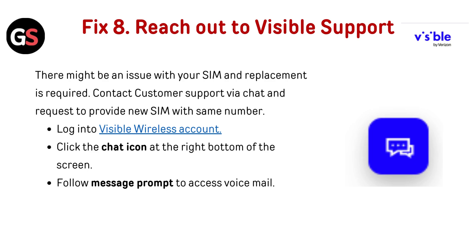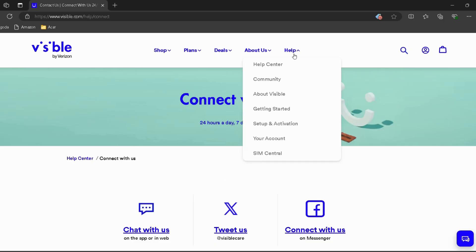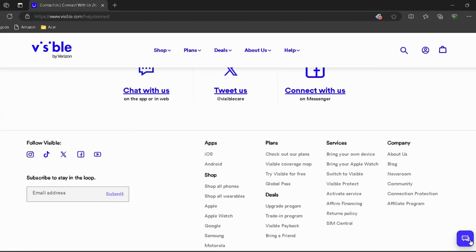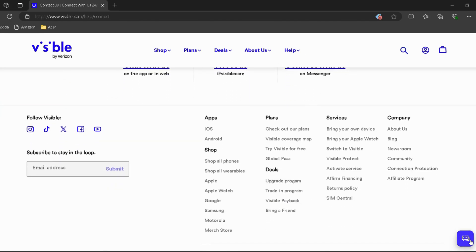Fix 8: Reach out to Visible Support. There might be an issue with your SIM and a replacement may be required. Contact customer support via chat and request a new SIM with the same number. Log in to your Visible Wireless account — I have provided the link in the description — then click on the chat icon at the bottom right of the screen.